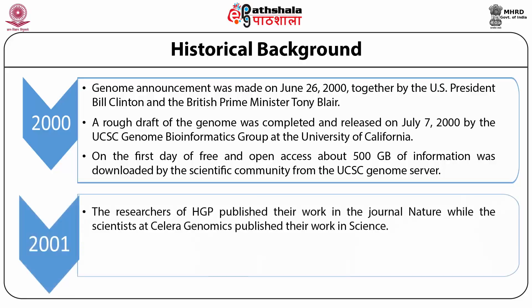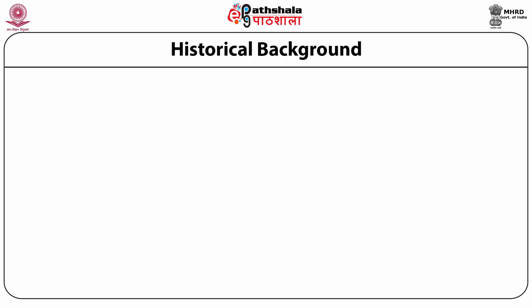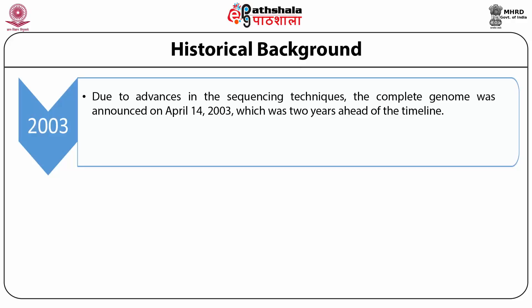In 2001, researchers of the HGP published their work in the journal Nature while scientists at Celera Genomics published their work in Science. These drafts covered about 83% of the genome, which included 90% of the euchromatin regions and had 150,000 gaps. In 2003, due to advances in sequencing techniques, the complete genome was announced on April 14, 2003, two years ahead of the timeline.